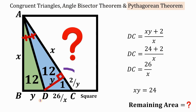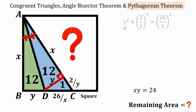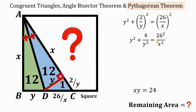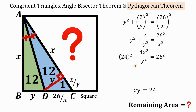Using the Pythagorean theorem on the small right triangle: y² + (2/y)² = (26/x)². Simplifying: y² + 4/y² = 26²/x². Multiplying all terms by x²: (xy)² + 4x²/y² = 26². Since xy = 24, we get 4x²/y² = 26² − 24².